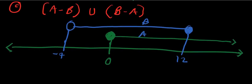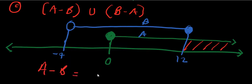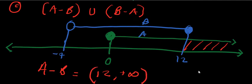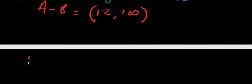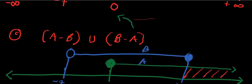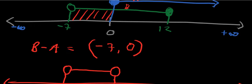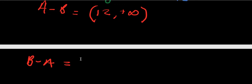When we remove B from set A we are left with the interval from 12 to positive infinity. Since 12 is in set B, it is not part of our answer for A minus B, giving us open bracket 12 comma positive infinity open bracket. Recalling our earlier result, B minus A was simply open bracket negative 7 comma 0 open bracket, where both endpoints are not part of the answer.